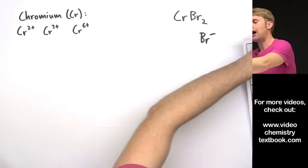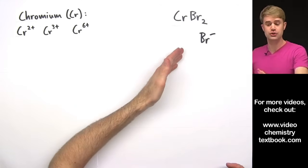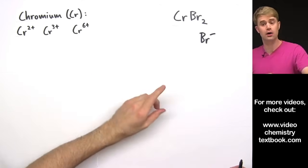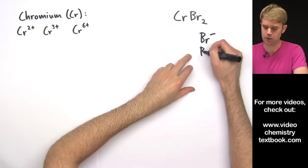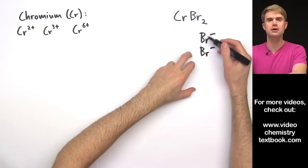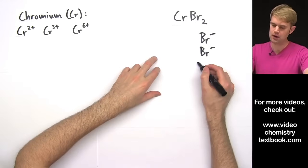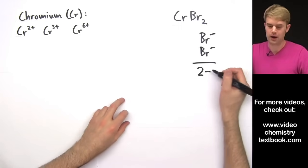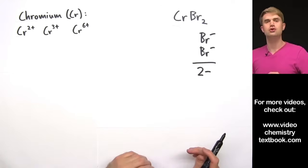Now, how much total negative charge do we have here? Well, there's this 2 after Br, which means that we have 2 Brs in this compound. So let me write another one in. And each one of these Brs has a charge of 1-. So that means that the total negative charge here is 2-.